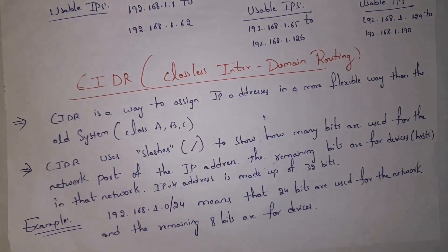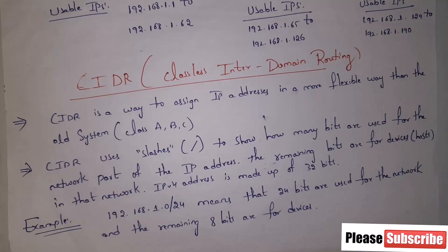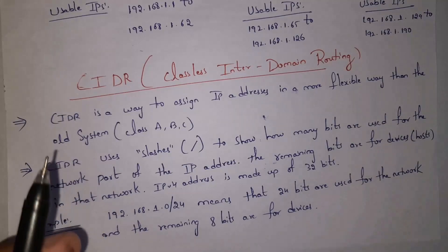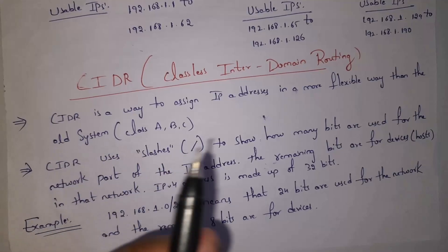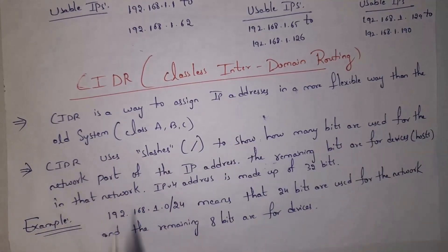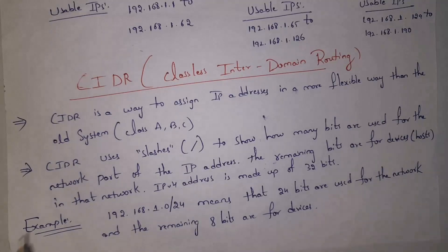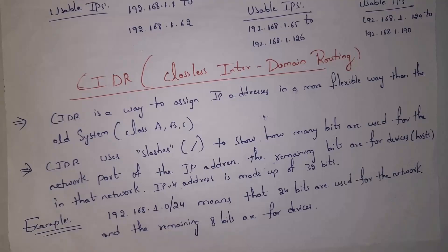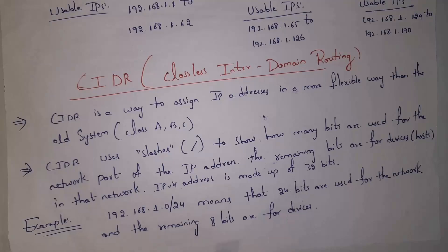Next let's explain what is CIDR, where CIDR stands for Classless Inter-Domain Routing. By using CIDR we can use Class A, Class B, and Class C IP addresses more efficiently. CIDR is a way to assign IP addresses in a more flexible way compared to the old class-based system. CIDR uses a slash notation to show how many bits are used for the network part of the IP address, and the remaining bits are for the host part.